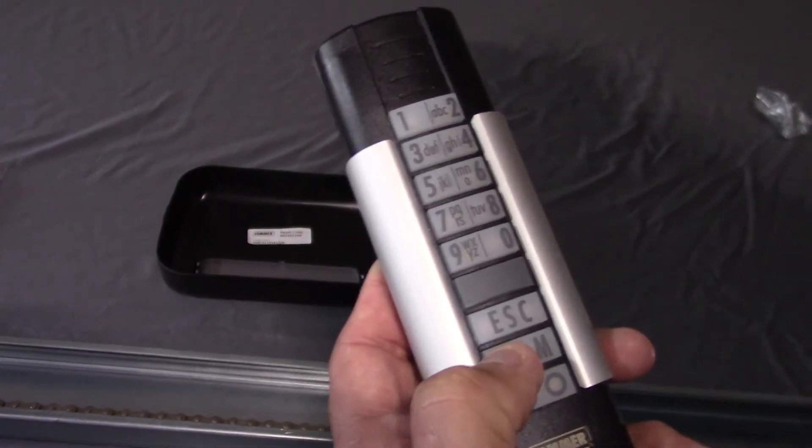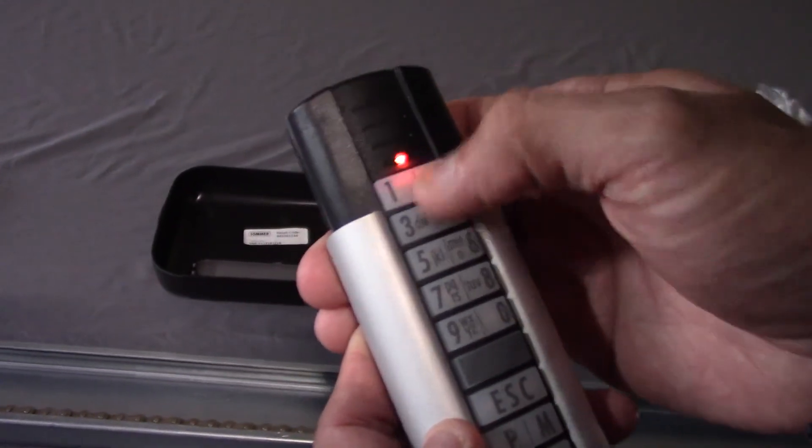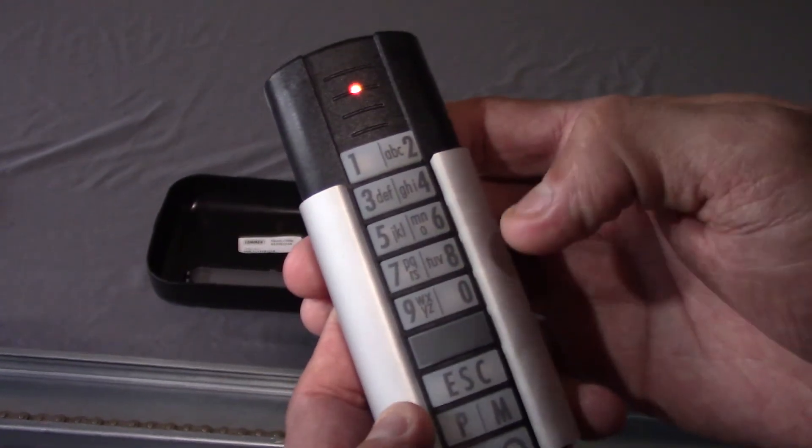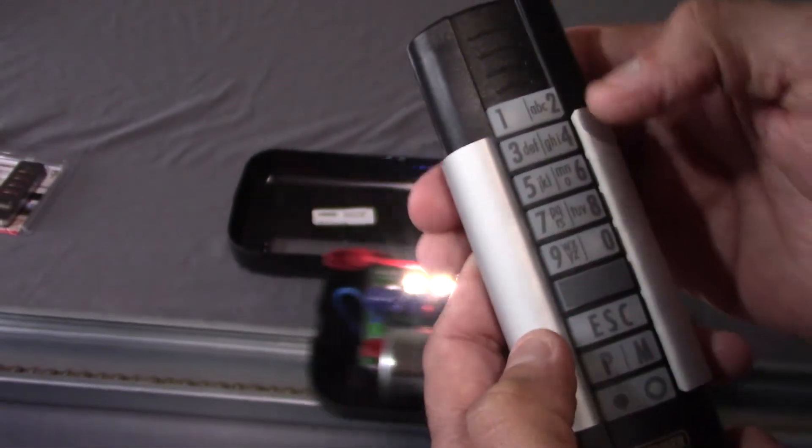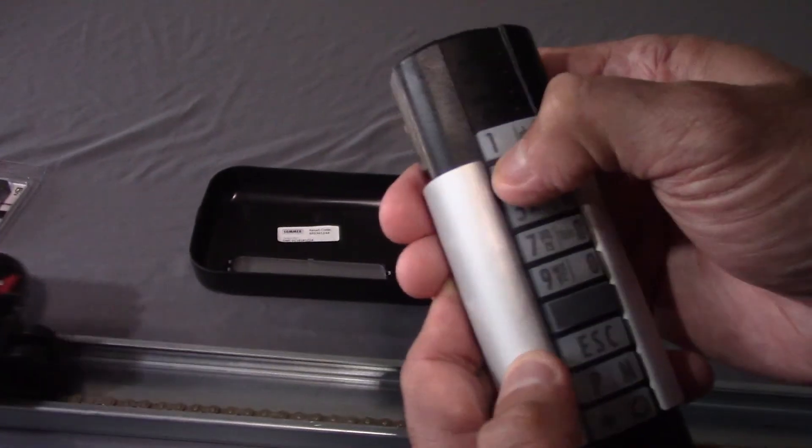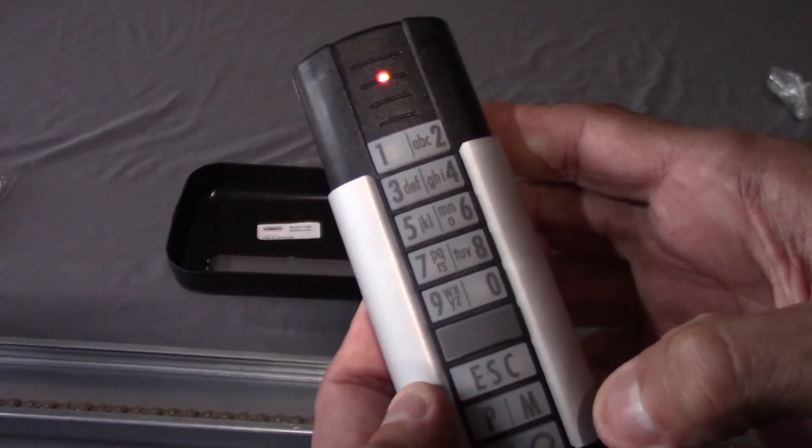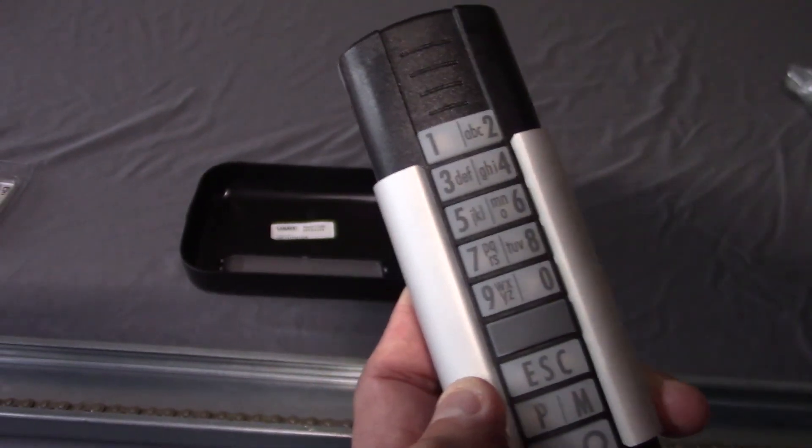So for the first door I have code 1234. For the second door I would have code 2345. That's how you know the keypad is sending them.